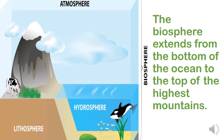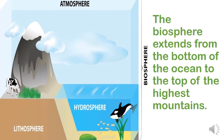Understood? Look at the picture — you can see lithosphere, hydrosphere, and atmosphere. From top to bottom, that is our biosphere. The biosphere extends from the bottom of the ocean to the top of the highest mountain. Our biosphere goes from the ocean bottom to the mountaintop.